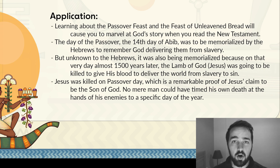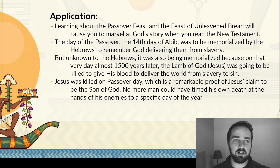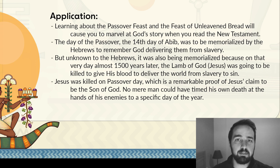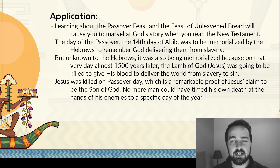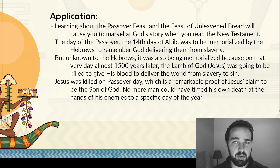Jesus was killed on Passover day, which could not have been a coincidence. It's a clear sign that his claims to be the Son of God were legitimate and that Jesus's life had been providentially guided by the hand of God so that the Passover feast and the symbols the Jews were familiar with from the Old Testament were foreshadows of what was coming in the true Savior, the true salvation. No man could have timed his own death to a specific day, especially considering Jesus's death was at the hands of his enemies. Understanding the symbolism and purpose of Passover helps us understand God's bigger story in sending Jesus to die that day to eventually free us all from slavery to sin.